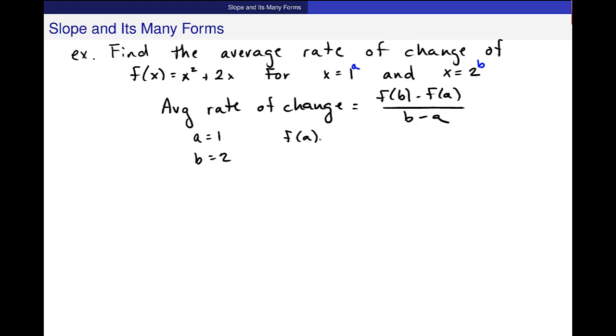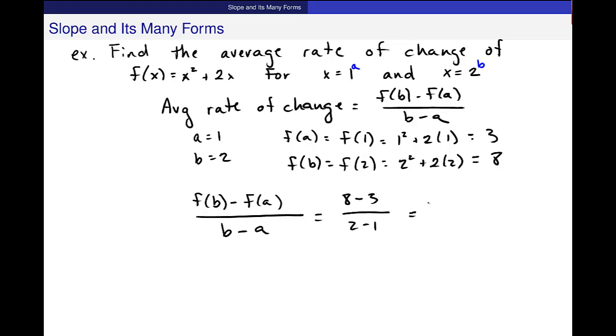So I get a equals 1, b is 2. f of a is f of 1, which is 1 squared plus 2 times 1, which is 3, and f of b equals f of 2, 2 squared plus 2 times 2, which should be 8. So let me find this: f of b minus f of a over b minus a is 8 minus 3 over 2 minus 1, which is 5 divided by 1, or 5.